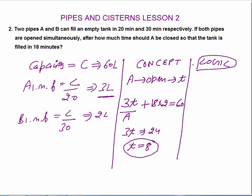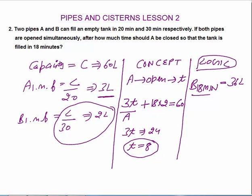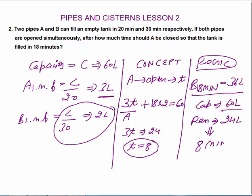By logic: B was open for 18 minutes, so B filled 36 liters. Total capacity is 60 liters, so the remaining 24 liters must have been filled by A. Since A fills 3 liters per minute, A took 24 ÷ 3 = 8 minutes to fill 24 liters. So pipe A was closed after 8 minutes. This is how you solve it in an exam in under a minute.